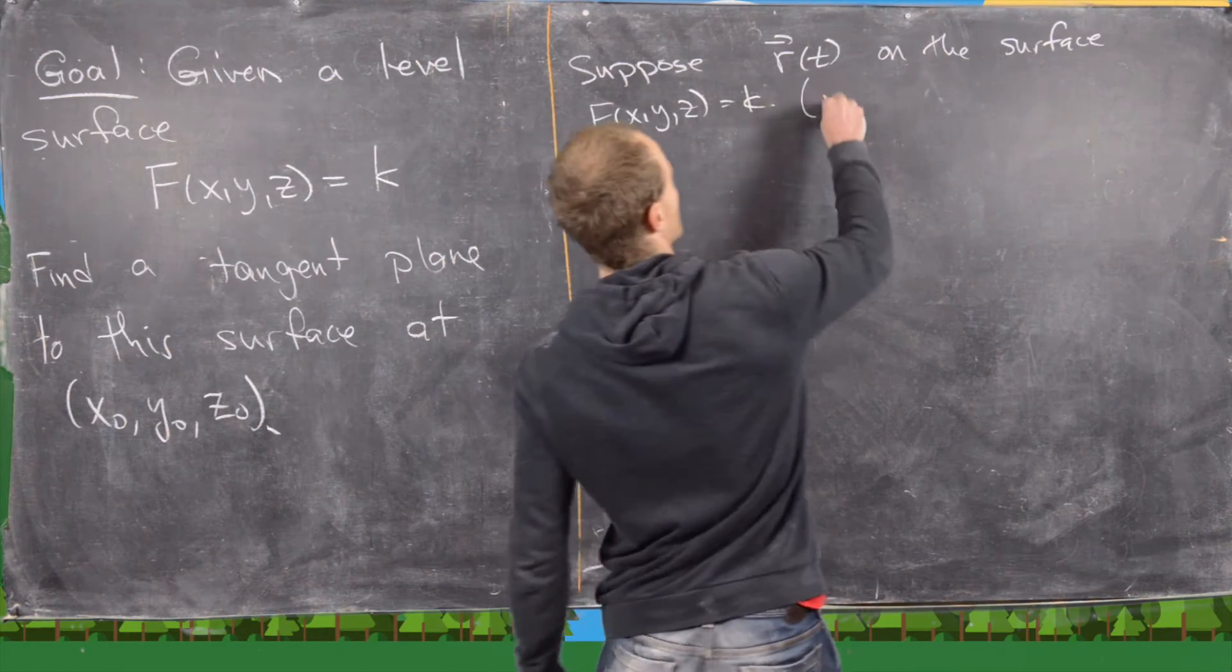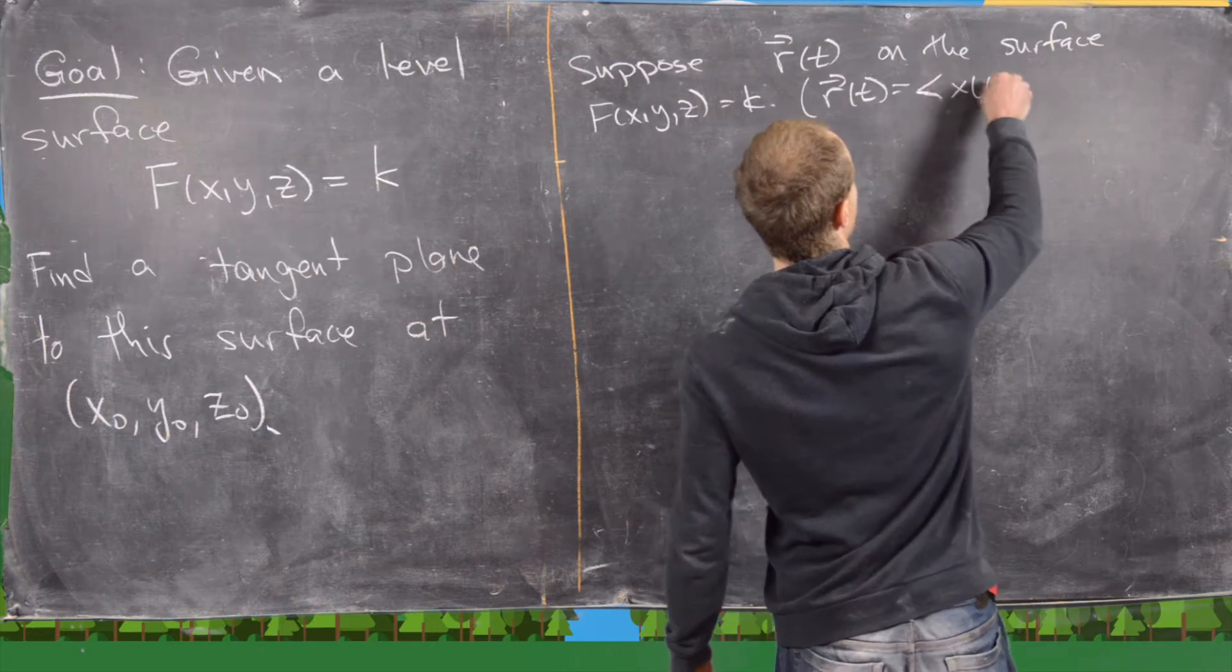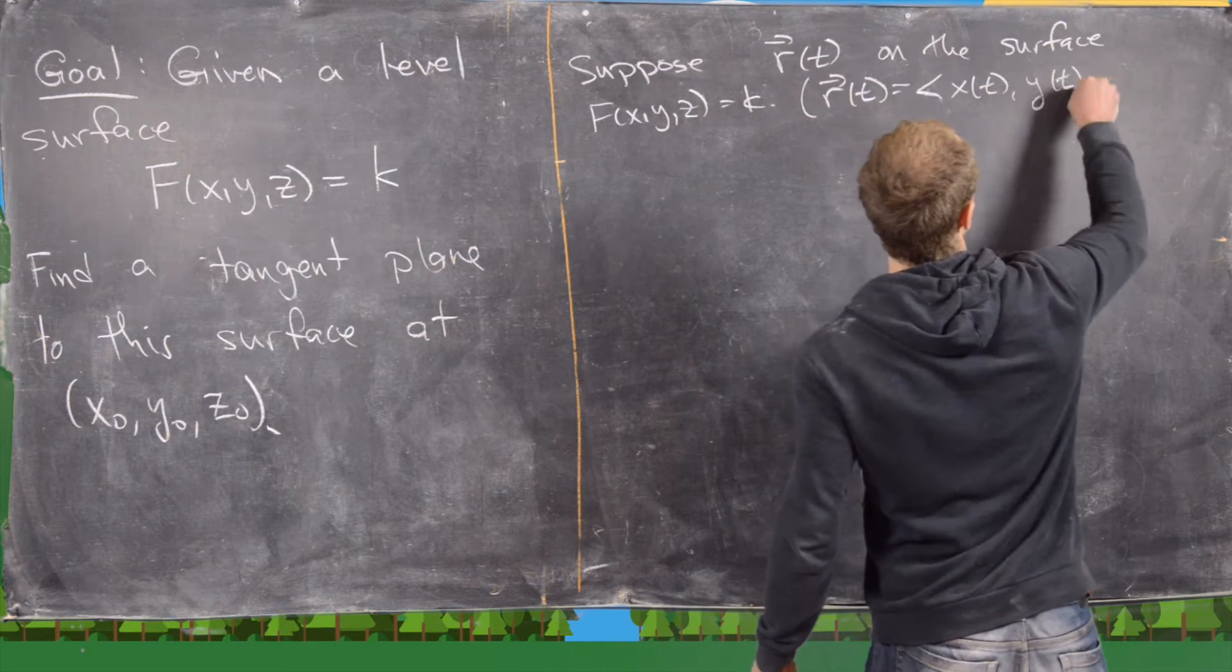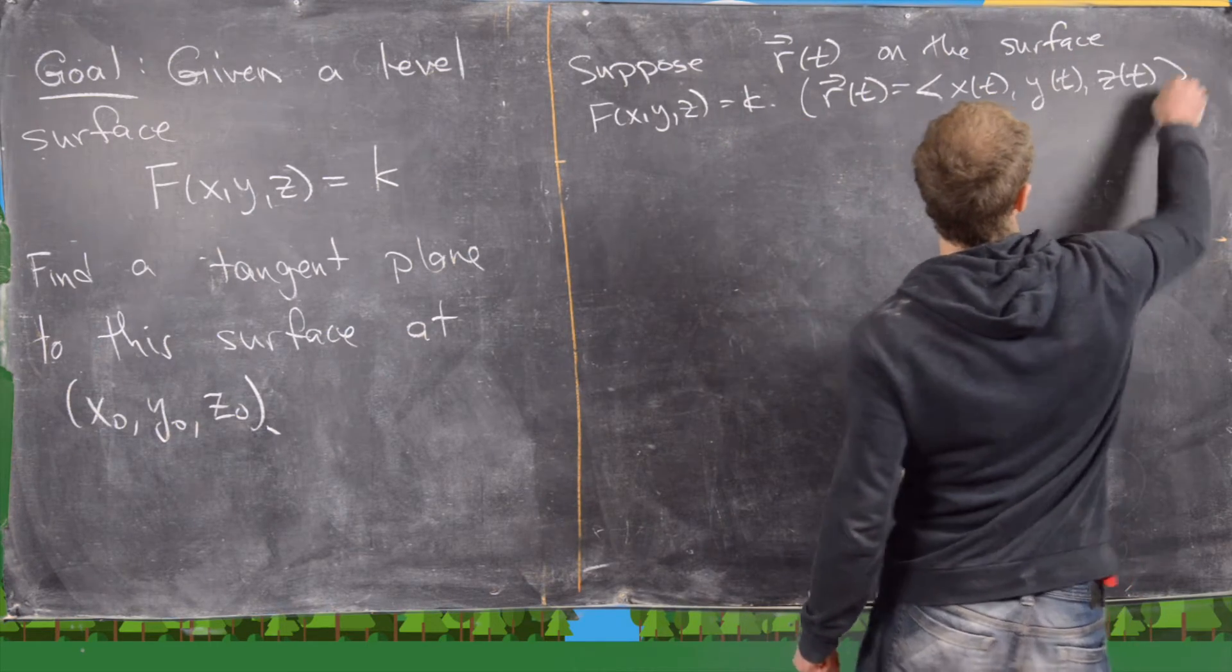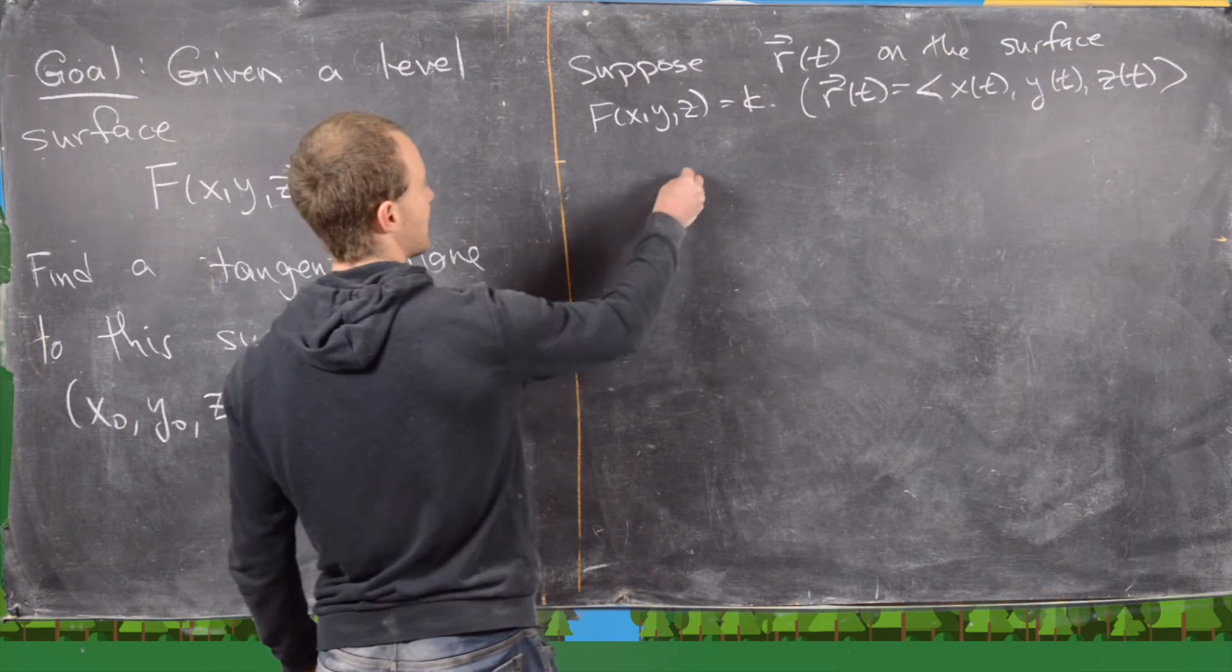So in other words, we could say r of t has vector equation x of t, y of t, z of t. So let's look at a little picture of that.